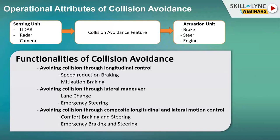The first strategy is longitudinal control, which is mostly dependent on the brakes of the ego vehicle. Throughout this webinar, I'll mention ego vehicle and ego lane frequently. The ego vehicle is my vehicle — the autonomous vehicle where all the control features and the algorithm are working. The lane in which the ego vehicle is running is called the ego lane. So the ego vehicle can get into longitudinal control, lateral control, or a composite longitudinal and lateral motion for collision avoidance.